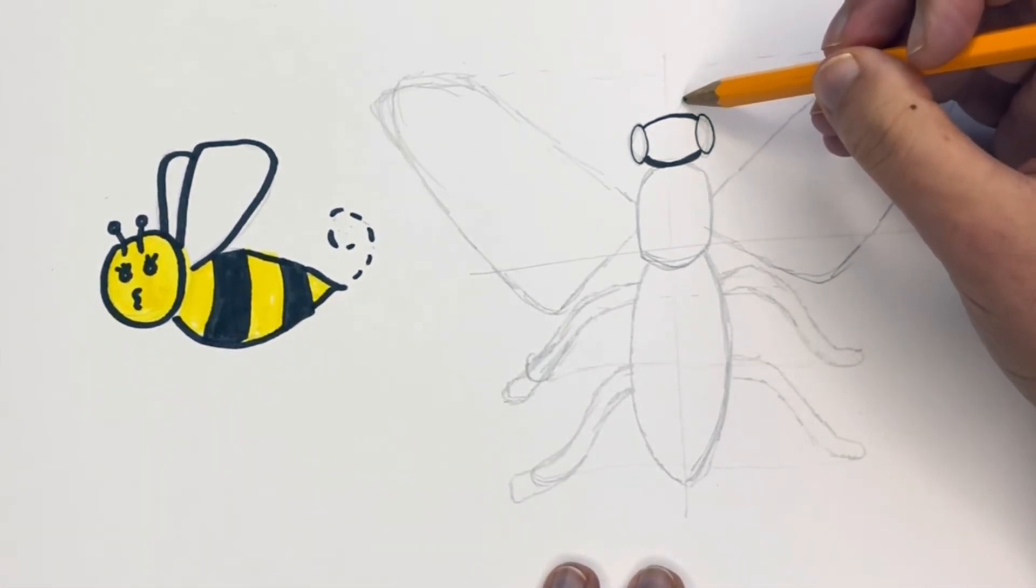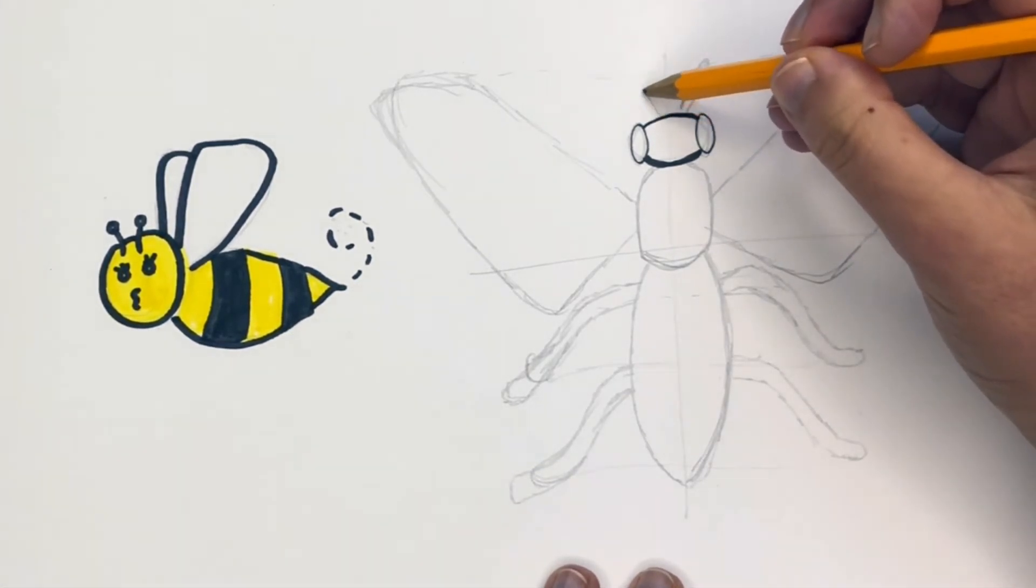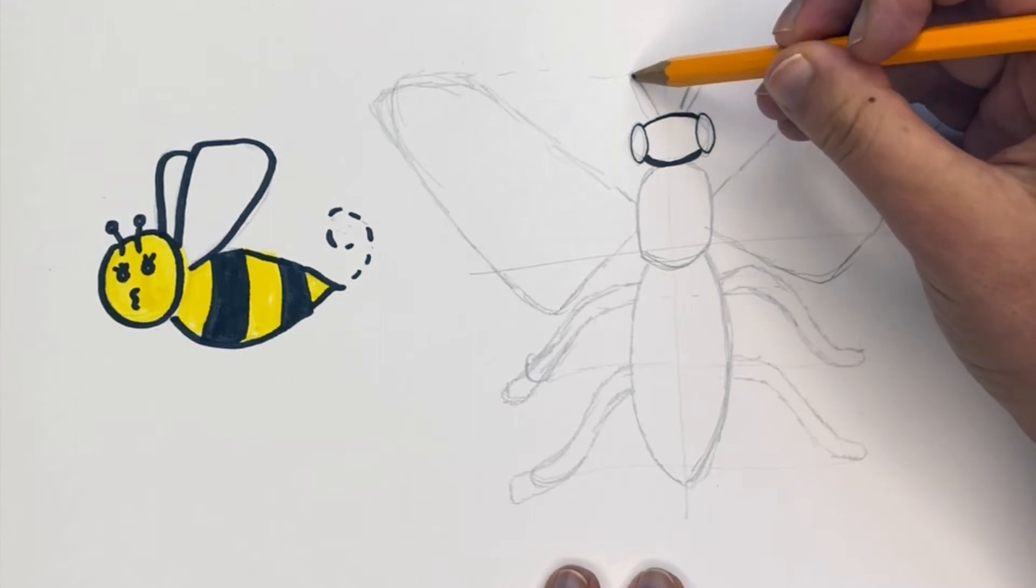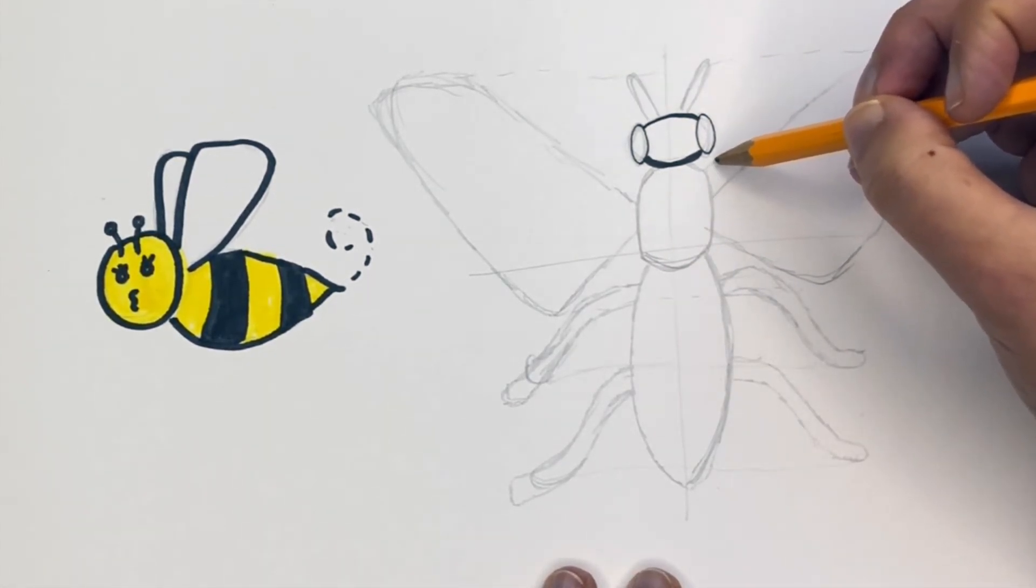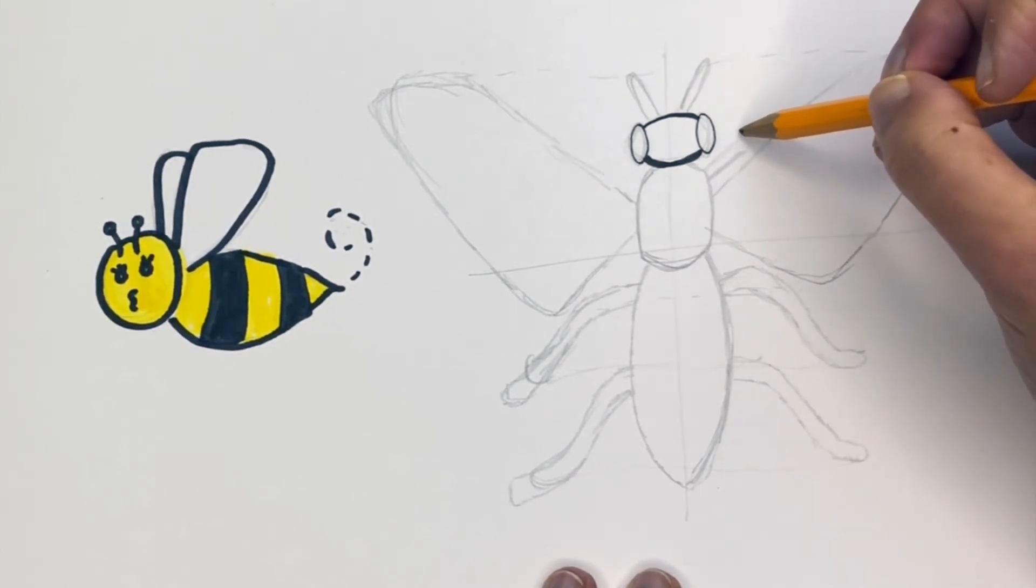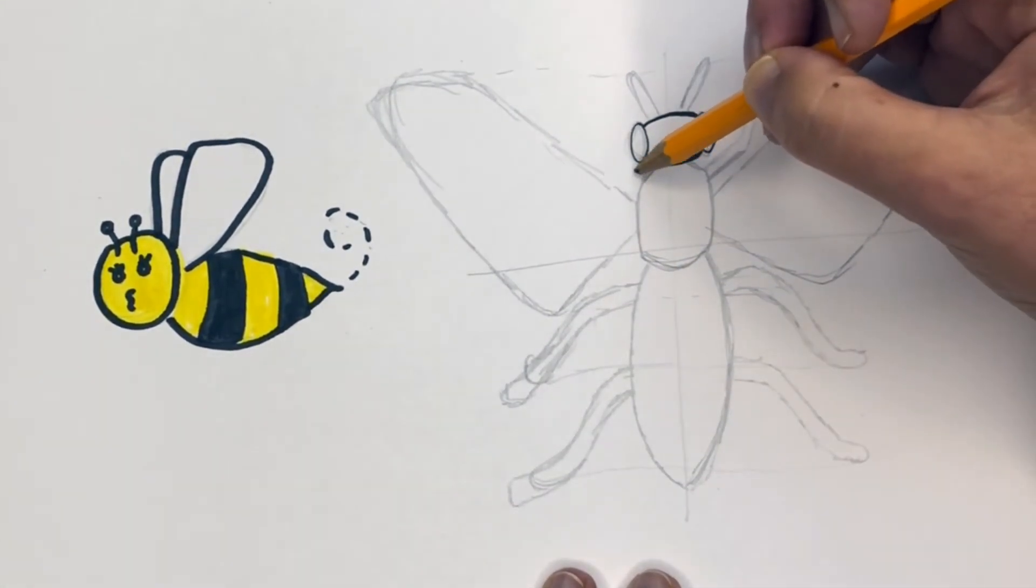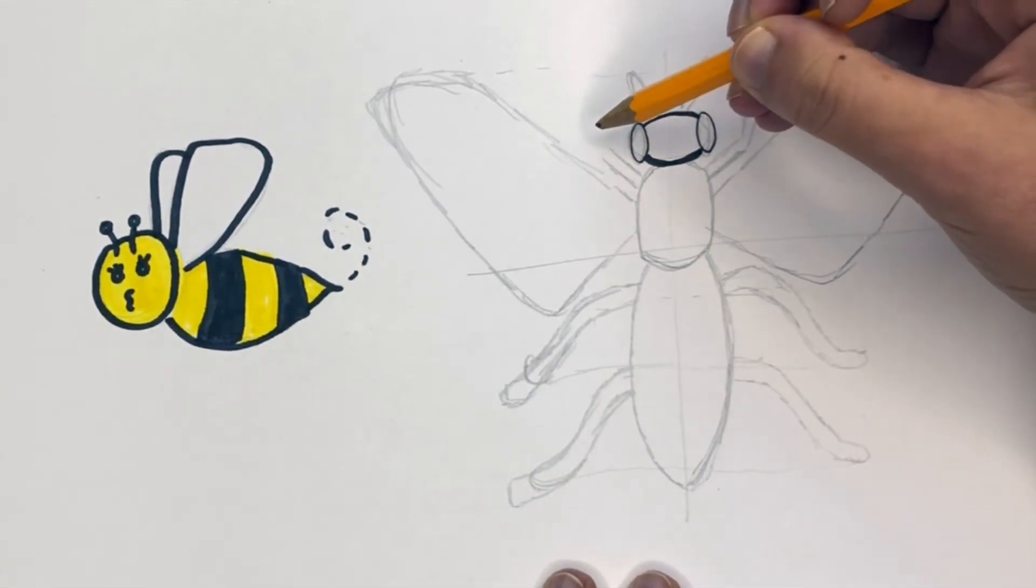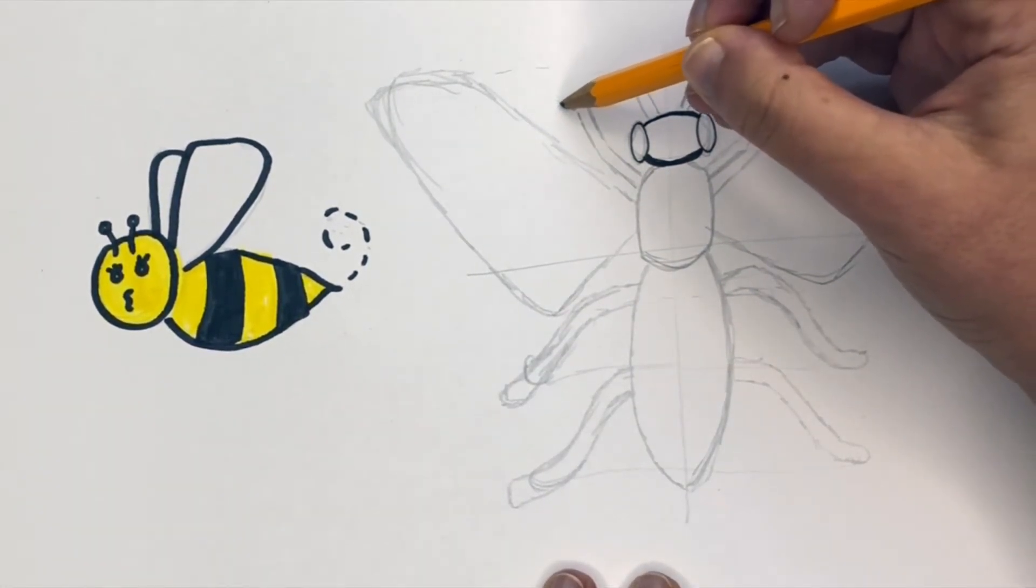We're going to have our antennas coming out. Just little ovals or little cylinders. And then we have our front legs coming out. Two straight lines out. Then they go up. And then they go over. So let's do the same thing over there. They go out. Then they go up. And then they go over.